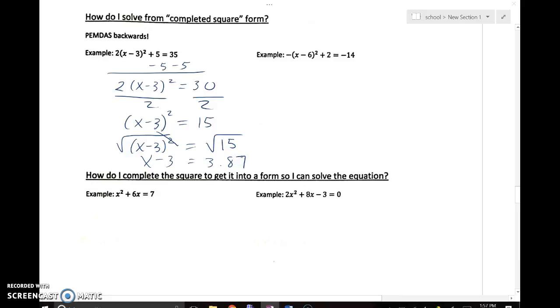Now at this point, you need to keep in mind that there are two answers. When I take the square root, I actually have a positive and a negative case to accommodate the need for two answers. So I've got x - 3 equals plus or minus 3.87. I'm going to add 3 to both sides, so x equals 3 plus or minus 3.87.